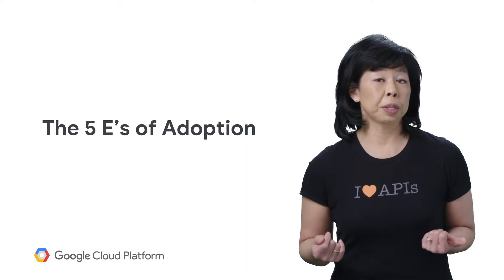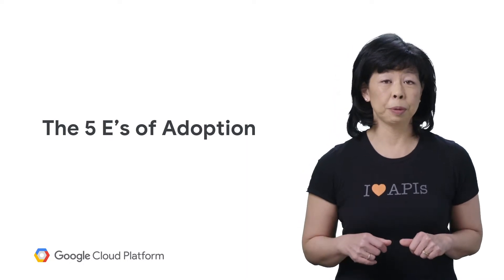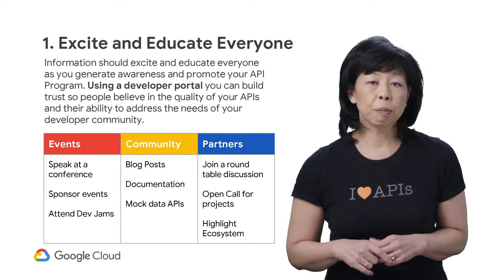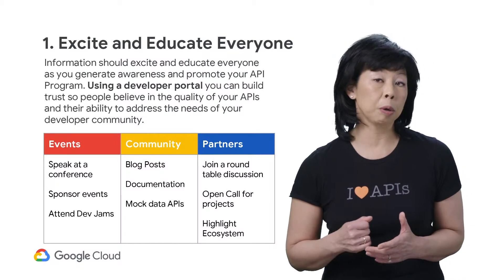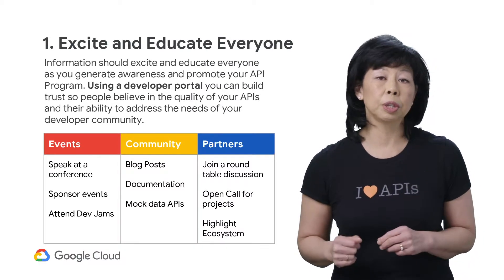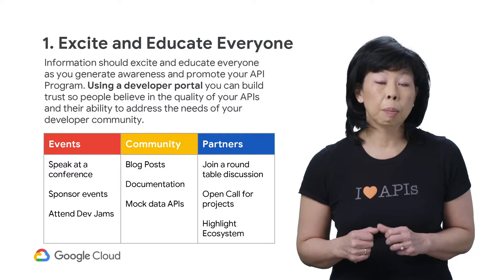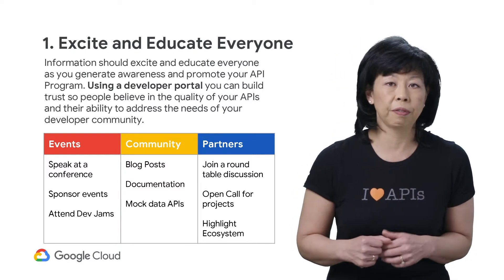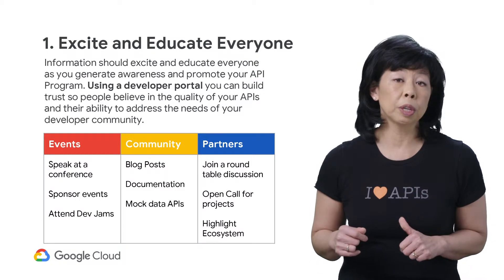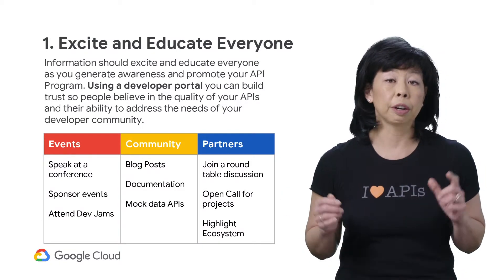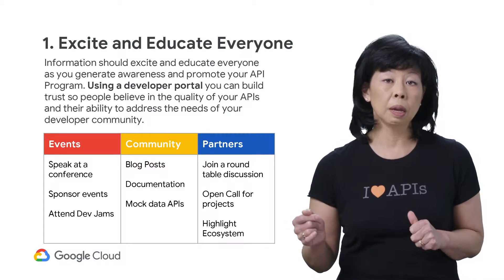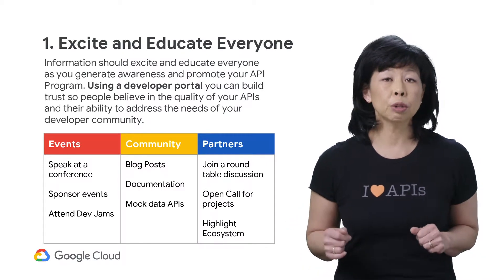Let's dive into these questions by looking at the five E's of adoption. First, you must excite and educate everyone. Information should generate awareness and promote your API program. Using a developer portal can substantially increase trust and bring credibility to your APIs by treating both your internal and external developers equally. A few ways you can increase adoption to your developer portal is through sponsoring events, writing blog posts, sharing freemium mock data so developers can try out your API products on the spot, and highlighting your ecosystem and partnerships.